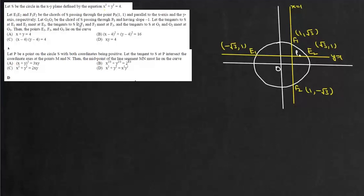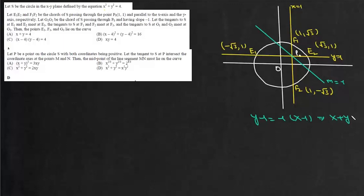Let g1, g2 be the chord of S passing through P₀ and having slope −1. The equation of this line is y − 1 = −1(x − 1), which simplifies to x + y = 2. So g1 is (0, 2) and g2 is (2, 0).